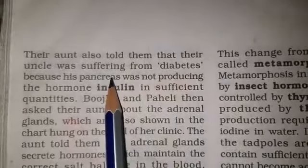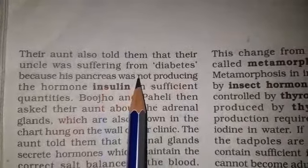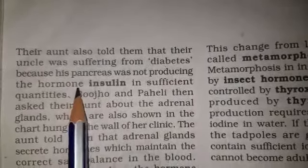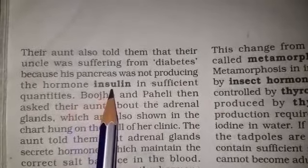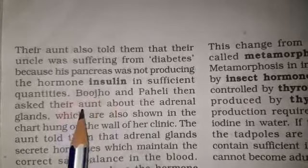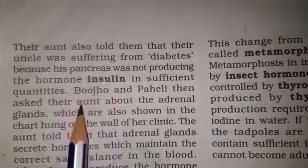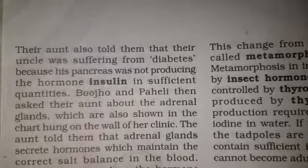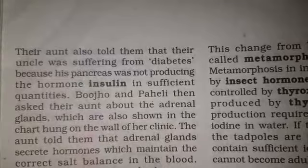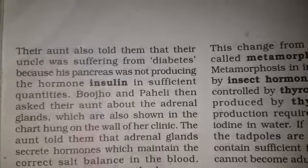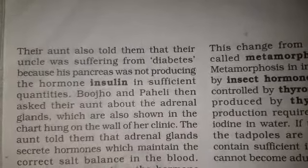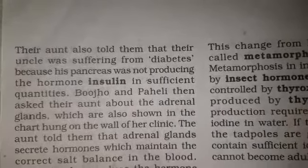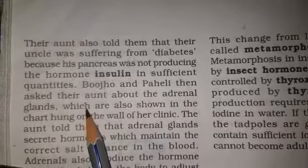Their aunt explained that their uncle had diabetes because his pancreas was not producing the hormone insulin in sufficient quantities. The pancreas is both an organ and a gland — it releases the hormone insulin. If insulin is not released in a sufficient amount, the patient gets diabetes.